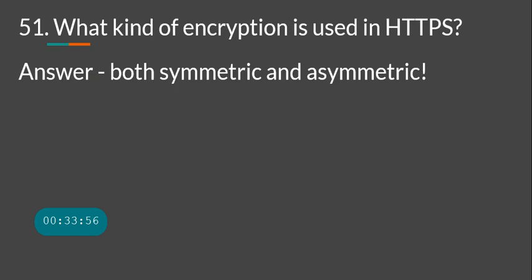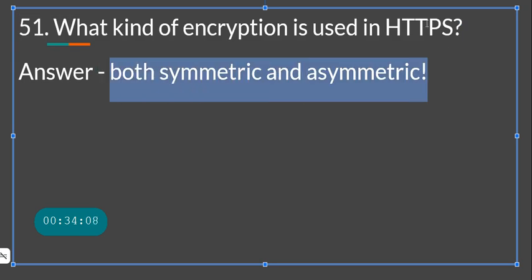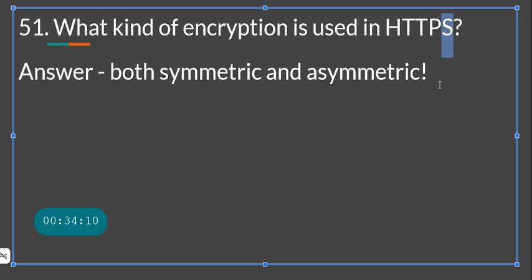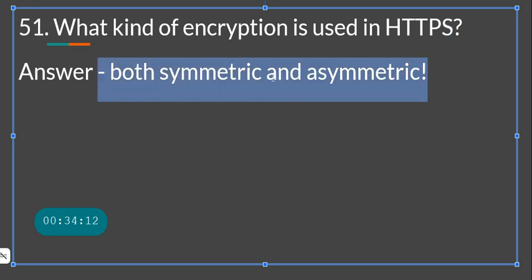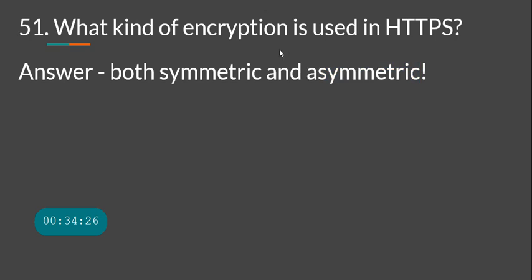Bonus question: what kind of encryption does HTTPS use? This is a trick question. HTTPS uses TLS and employs both symmetric and asymmetric encryption. Asymmetric encryption is used to exchange the key, and then symmetric encryption is used for the actual data transmission. Research this topic further for a full understanding.